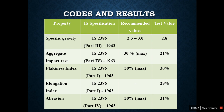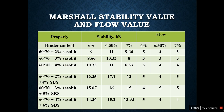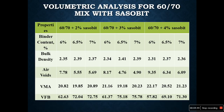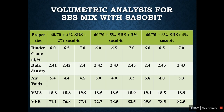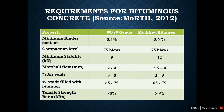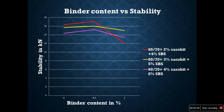The Marshall stability values and flow values have been given, along with volumetric analysis for the 60/70 mix. The requirement for bituminous concrete is given where values fall within varying limits, and the binder content visibility graph is also provided.